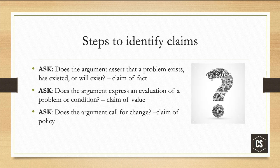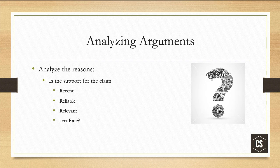When you see a claim — and you might see some in the rhetorical analysis — you can ask these questions to help define what kind of claim is being made. Does the argument assert that a problem exists, has existed, or will exist? That is a claim of fact: 'Poverty is dirt.' Does the argument express an evaluation of a problem or condition? Such as 'Poverty is bad' — that's a claim of value. Does the argument call for change? That's a claim of policy: 'Poverty must be eradicated.' Those are claims that you make, and then you provide evidence to prove.